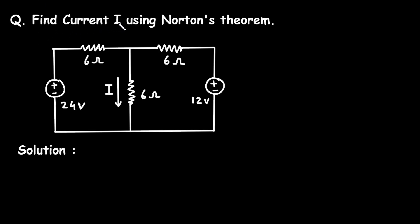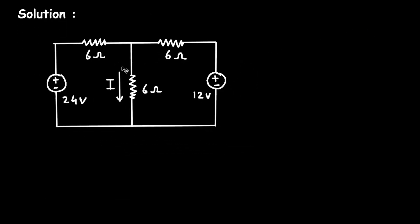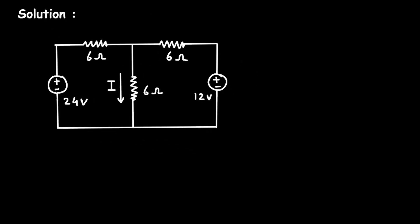Question: find current I using Norton's theorem. For this circuit, we have to find the value of this current I by using Norton's theorem. We can see this 6 Ohm is the load resistor, so we can write RL is equal to 6 Ohm.